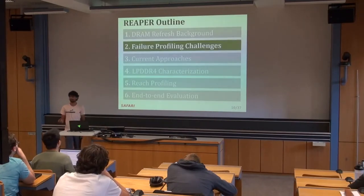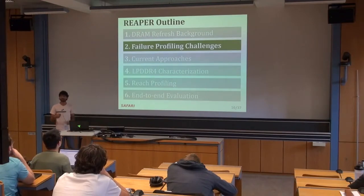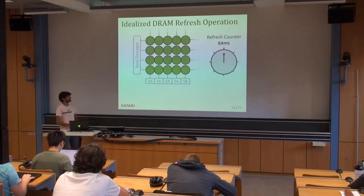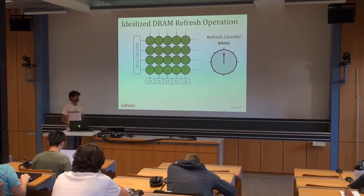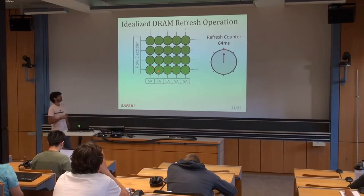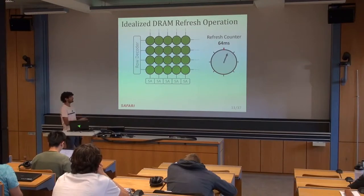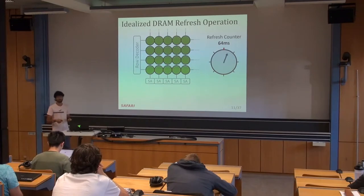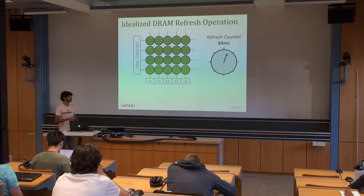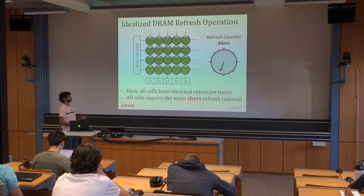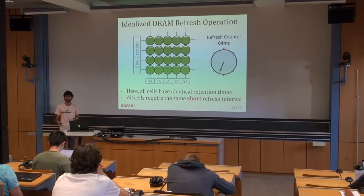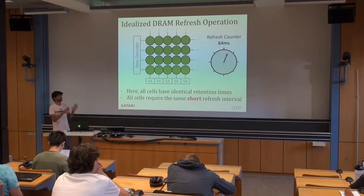I'm going to talk about some of the challenges surrounding retention failure profiling and why it's so difficult to have a fast and reliable mechanism. Here's a simplified diagram of what a DRAM refresh operation might look like — a 2D array of cells shown in green with a refresh counter counting down until the next refresh operation. Every 64 milliseconds, the charge is fully restored. This is an idealized depiction because every single cell has the exact same retention time, which would mean there's nothing really for us to do by profiling because every cell is identical.